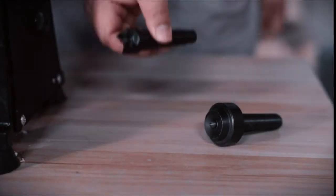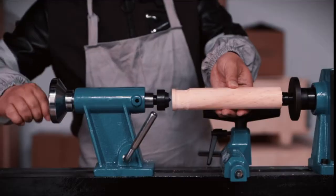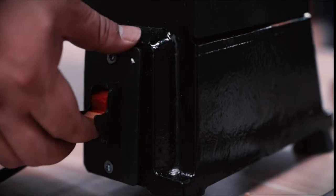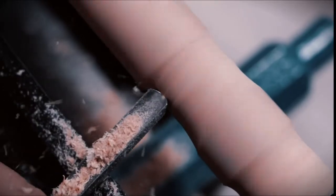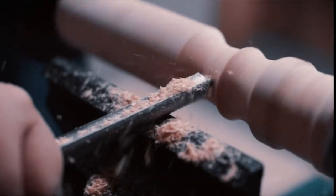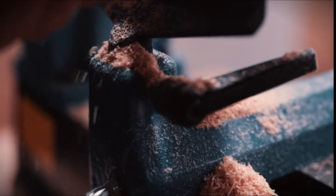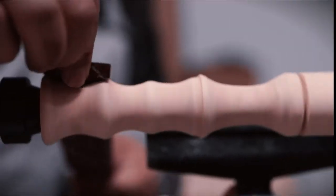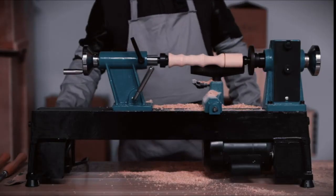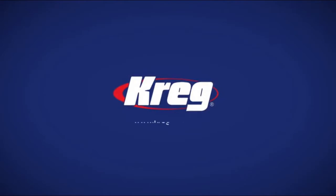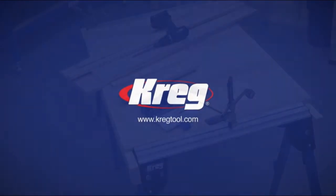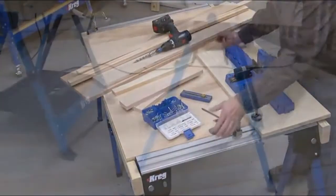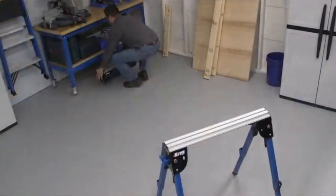Number five. Make any place your workspace with the Kreg Trackhorse. This sturdy, versatile, and portable work support makes it easy to set up a workspace anywhere and then store it compactly away when not in use.